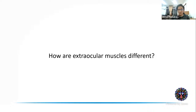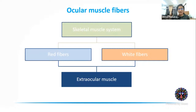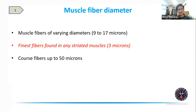Extraocular muscles are striated muscles, but are they similar to other striated muscles elsewhere in the body? They are not. In most striated muscles, fibers are characterized as either red or white. What is unique about extraocular muscles is that both systems must function simultaneously — the same muscle has both types of fibers and both types of function. Let's explore the histologic differences.